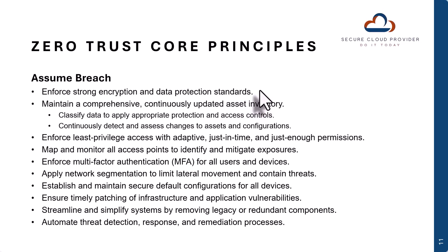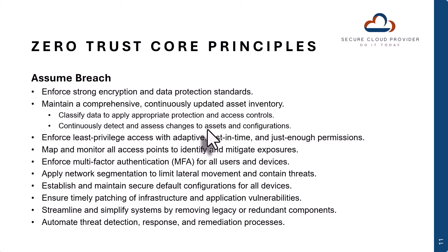If there's a breach, you want to make sure that the data within your environment is protected. You also want to maintain a comprehensive, continuously updated asset inventory because you want to know where your sensitive data is, and you want to be able to detect when there have been asset changes — whether assets were added or modifications made to existing assets. Enforcing least privilege access with just-in-time capabilities is really important. Too many times companies allow the broadest set of permissions possible when this really needs to be limited.